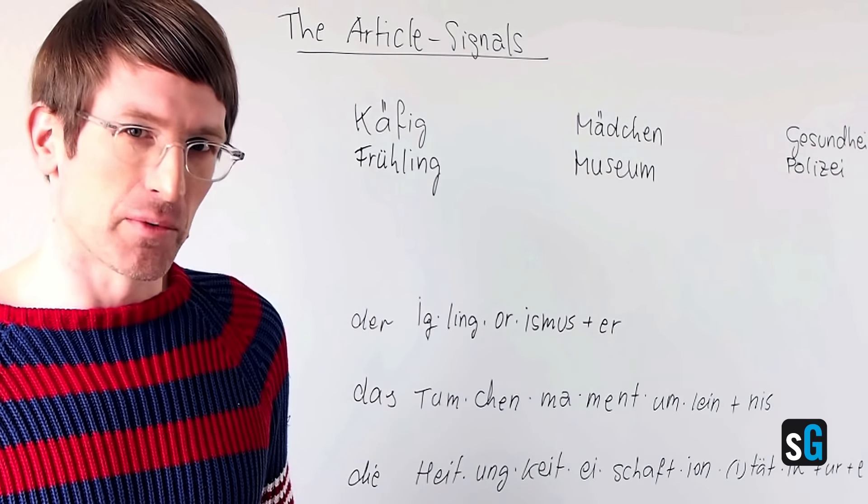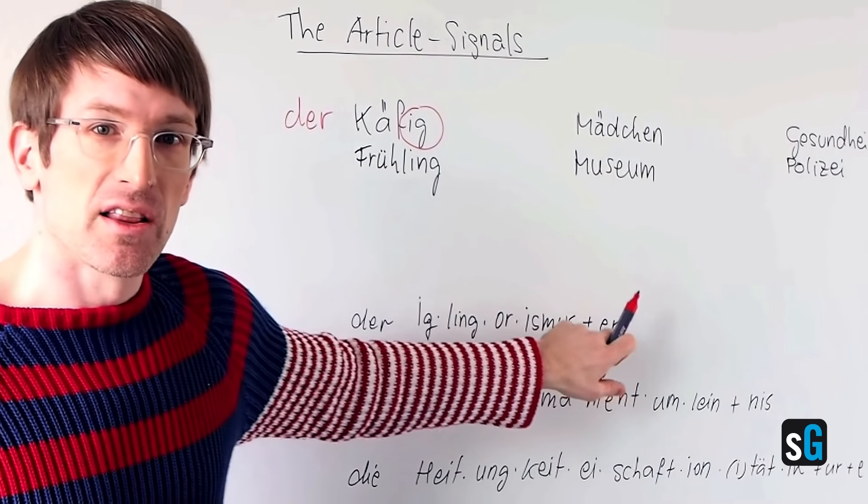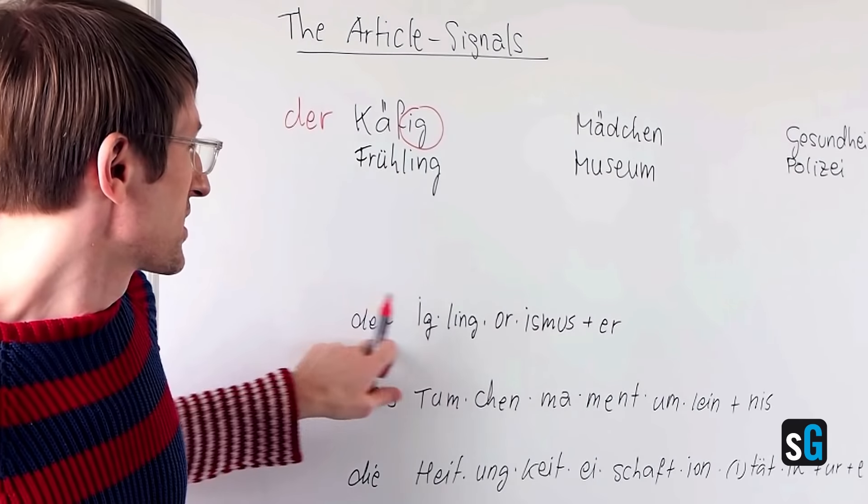Take a look at Käfig, for example. I can see there is an IG at the end, which tells me that this word needs the article DER. And if you look down here, I have written down three lines with all the signals for the appropriate article. So DER: IK, LING, OR, ISMUS and ER — these all require the article DER.